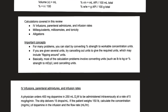We're going to cover in this review: IV infusions, parenteral admixtures and infusion rates, milliequivalents, millimoles, milliosmoles, and tonicity and allegations. A key concept: for many problems, you can start by converting percent strength to workable concentration units such as grams of API per 100 grams total, and then cancel out units to get the required units. Most calculation problems involve converting and cancelling units to get the required units.